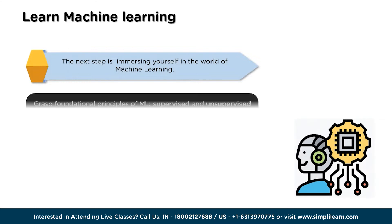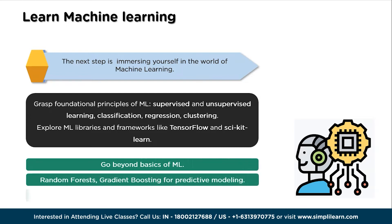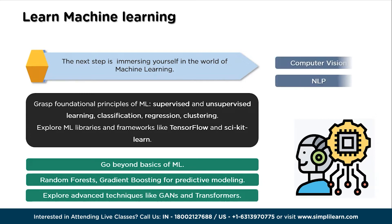The next pivotal step is to learn machine learning. Start by grasping the foundational principles of ML, including supervised and unsupervised learning, classification, regression, and clustering. Explore libraries and frameworks like TensorFlow and Scikit-learn. In 2024, it is crucial to go beyond the basics and delve into advanced techniques — focus on ensemble methods such as random forests and gradient boosting. Additionally, explore deep learning architectures like generative adversarial networks (GANs) and transformers, which are revolutionizing computer vision and natural language processing.